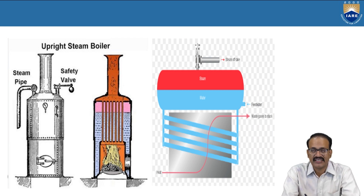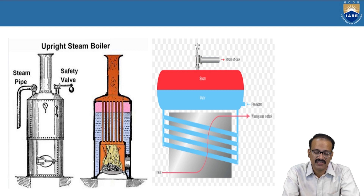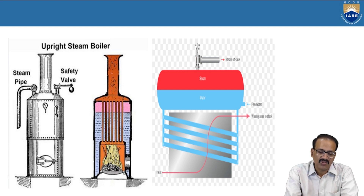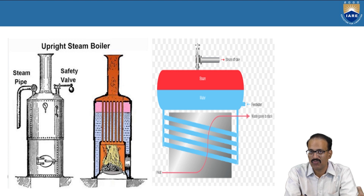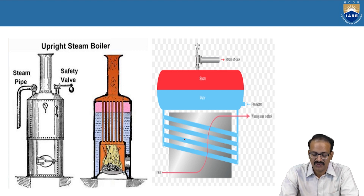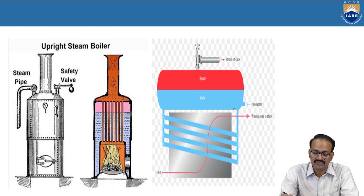In the vertical boiler, the fire is at the bottom and the gases are surrounded by water. Slowly the water gets heated and it goes out from the outlet — there is an outlet for the escape of steam and an outlet for the escape of flue gases. In the inclined boiler, you can observe the pipes are inclined, the heat moves along them, and the water in the inclined pipes gets heated and slowly converts into steam.